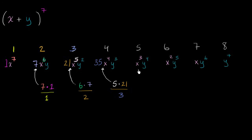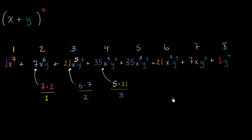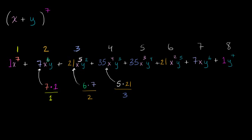We can keep going, or we can recognize there's a symmetry. If the first term is one, the last is also one. If the second is seven, the second-to-last is seven. If the third is 21, the third-to-last is 21. And if the fourth is 35, the fourth-from-the-last is 35. Just like that, we've figured out the full expansion of x plus y to the seventh power. Pretty neat.